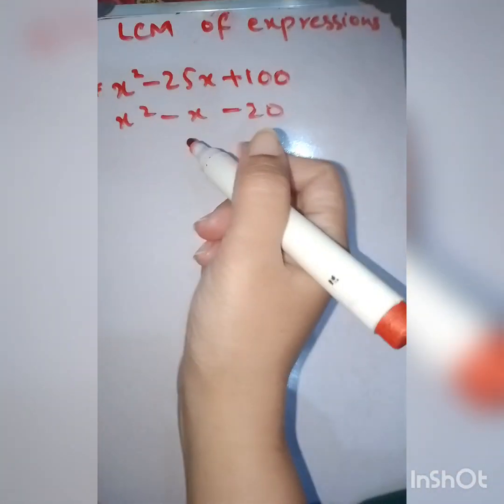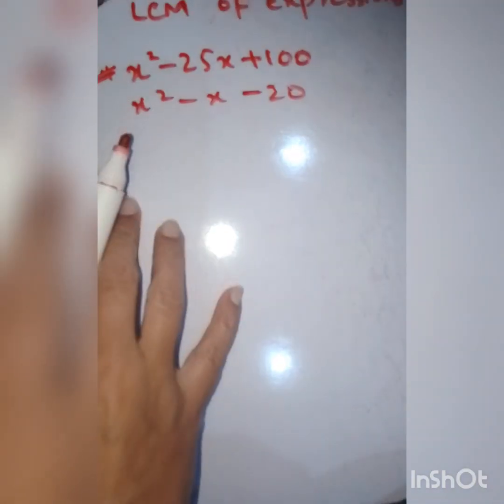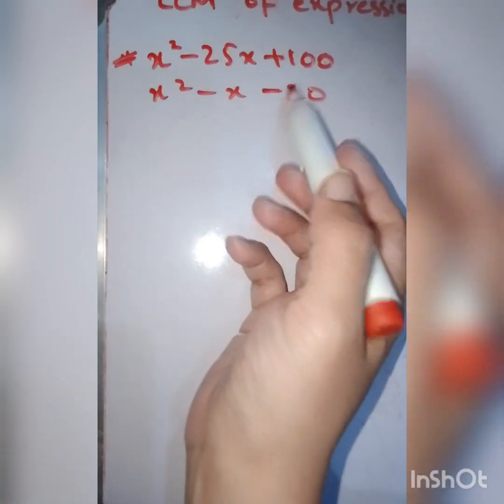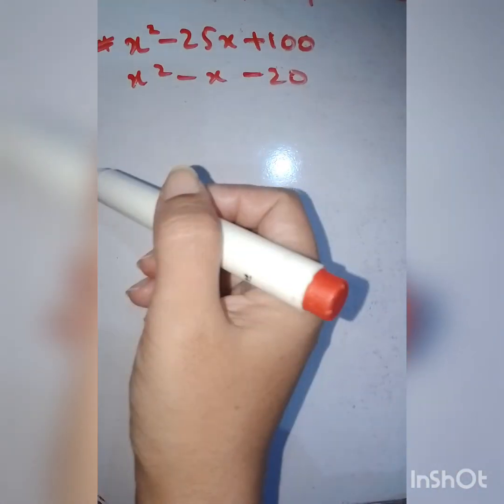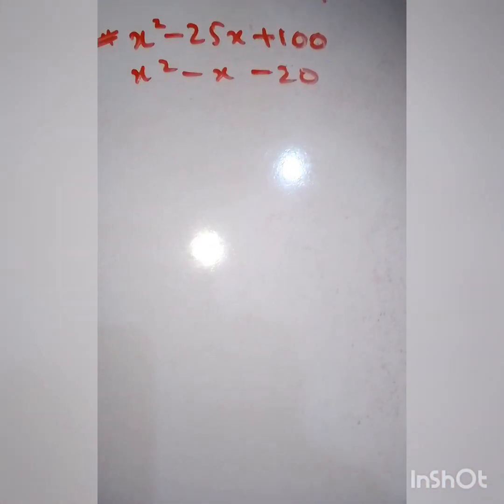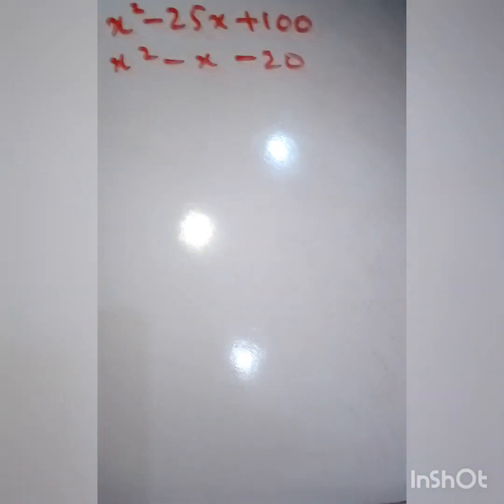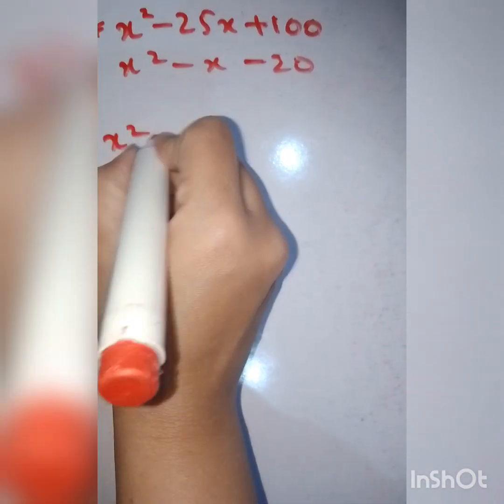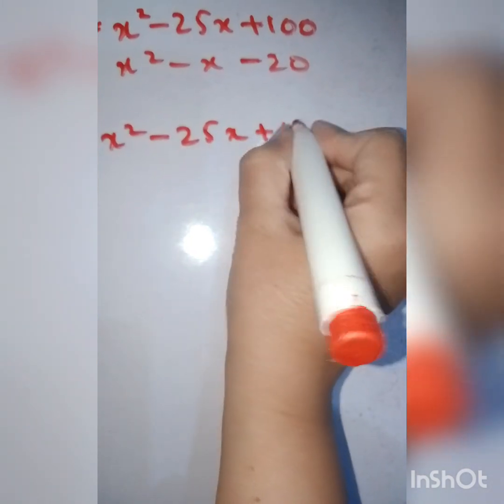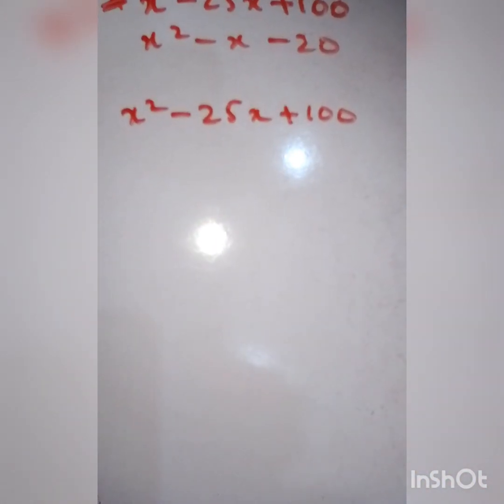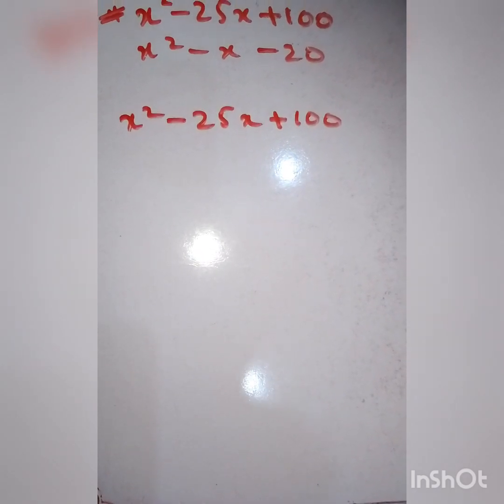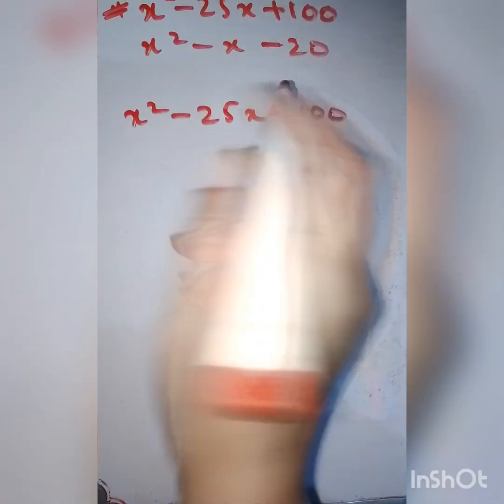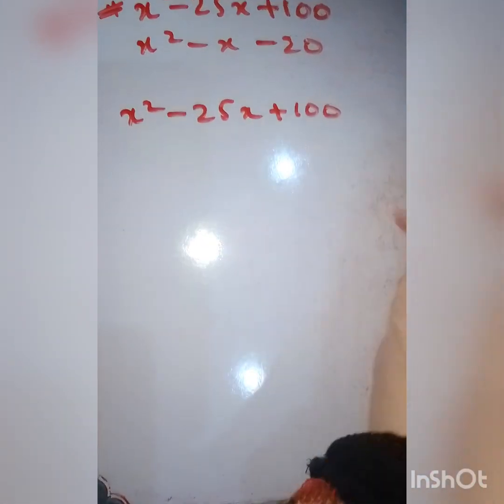Here we are going to discuss the second method of finding LCM. Here we have expressions, whereas previously we were working with terms. Let's see how to handle these kinds of expressions. x² - 25x + 100. We know that in factorization we have many methods. Here I can apply the middle term form easily.